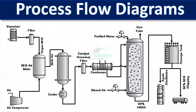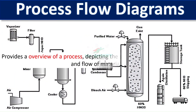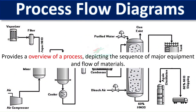Process Flow Diagrams, or PFDs, show the relationships between major equipment in a plant. They provide a high-level overview of the process flow, focusing on the main process streams and major equipment.